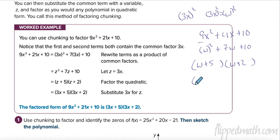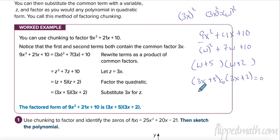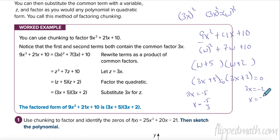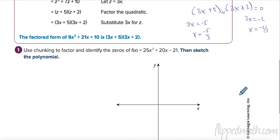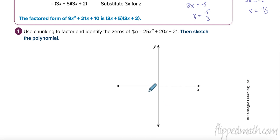Plug w = 3x back in to get (3x + 5)(3x + 2). Setting each equal to zero: 3x + 5 = 0 gives x = -5/3; 3x + 2 = 0 gives x = -2/3.